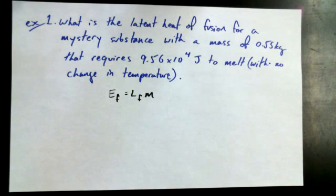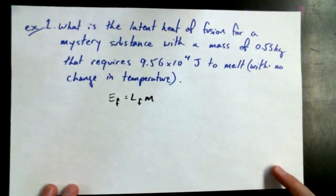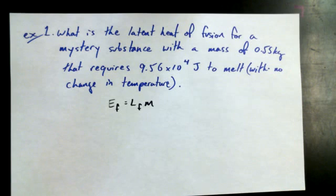All right, so we've got the equation for the latent heat of fusion, and we've got a nice scenario here where we've got this mystery substance that's 0.55 kilograms, and we're going to pour in 9.56 times 10 to the 4 joules of energy into the substance without changing its temperature, just changing its state.